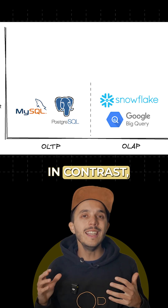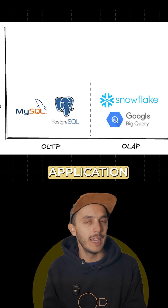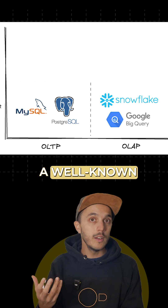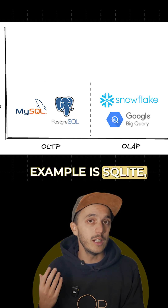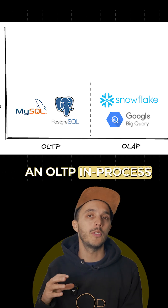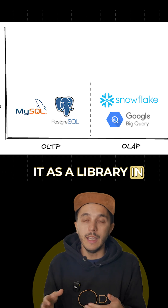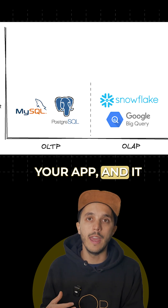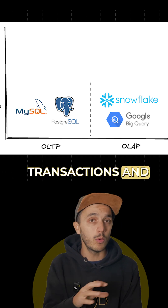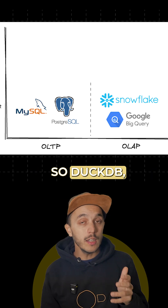In contrast, in-process databases run directly within the application process itself. A well-known example is SQLite, an OLTP in-process database. You simply include it as a library in your app and it handles transactions and queries without requiring a server.